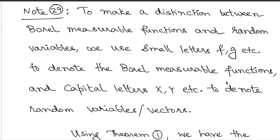Random variables are Borel measurable functions defined on probability spaces. To talk about Borel measurable functions in general, you don't require probability spaces — they are defined on appropriate measurable spaces without necessarily having a measure on the domain. Therefore all random variables are by definition Borel measurable functions, but not all Borel measurable functions are random variables. If you do not equip a measure, or equip a measure that is not a probability measure, you cannot call that Borel measurable function a random variable.